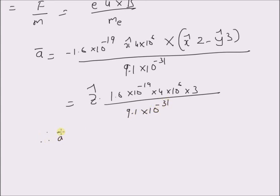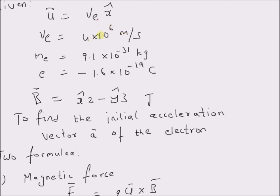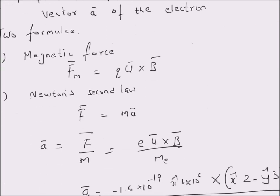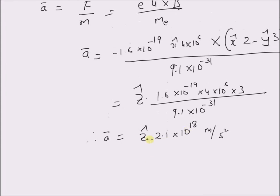Therefore, the acceleration vector is given by z-cap multiplied by 2.1 times 10 to the power 18 meters per second squared. Thus, for an electron entering a uniform magnetic field given by x-cap 2 minus y-cap 3, with a velocity Ve along the positive x direction, the initial acceleration vector is z-cap times 2.1 times 10 to the power 18 meters per second squared. That is, the acceleration is in the positive z direction. Thanks for watching.